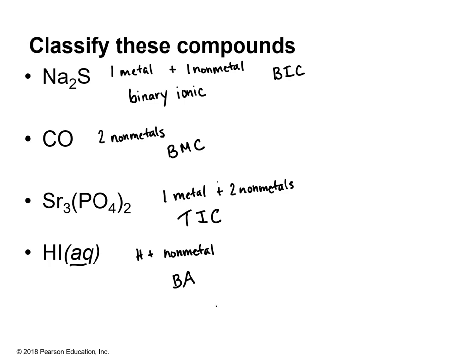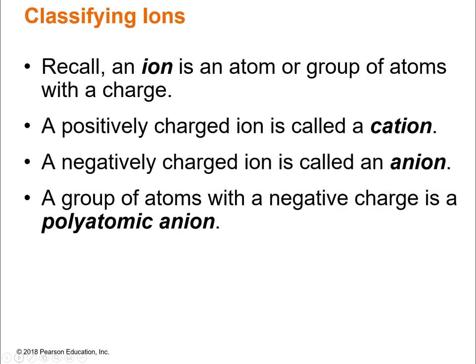That's how you can talk your way through to classify these different compounds. In class during live lecture we'll do more practice exactly like this. Moving on to ions — we talked about ions at the end of Chapter 5. An ion is an atom or a group of atoms with a charge. If you have a positively charged ion, it's called a cation. A group of atoms with a negative charge is a polyatomic anion. Poly means many.